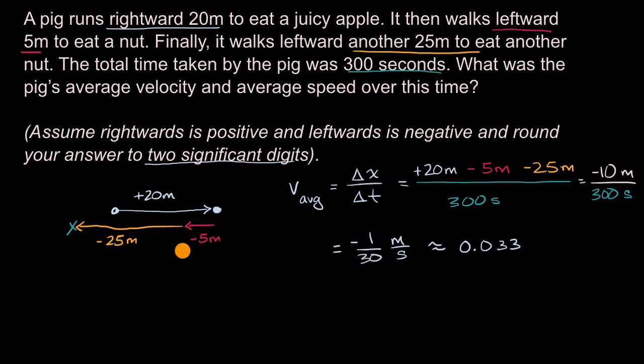Now let's try to tackle average speed. So our speed, r sometimes is used for speed, r for rate. Our average speed is not going to be our displacement divided by our elapsed time. It is going to be our distance divided by our elapsed time.